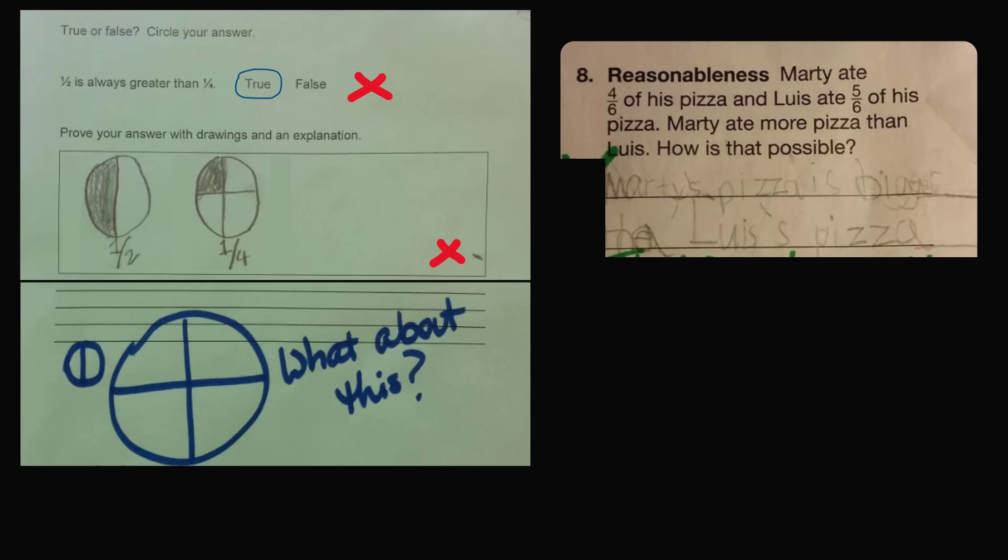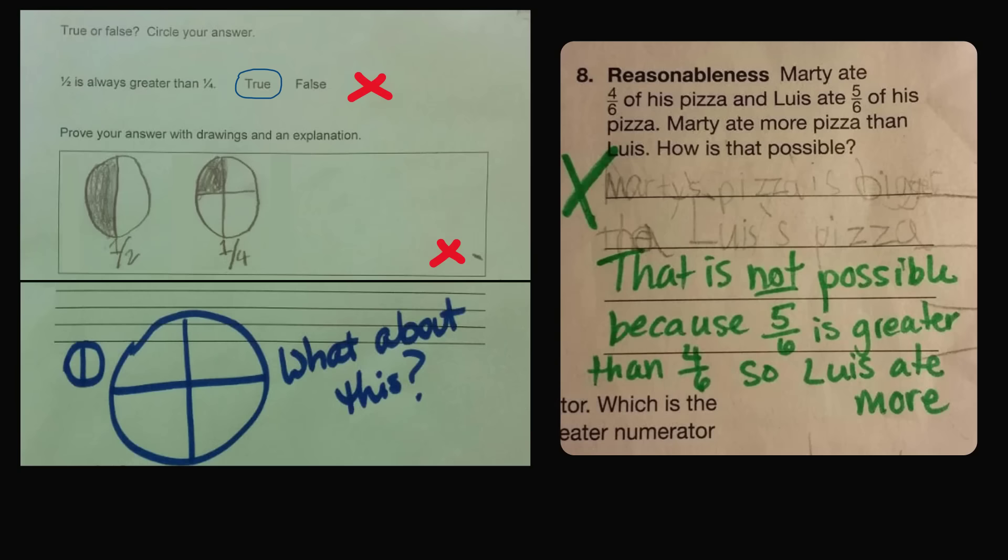In this exercise, the student wrote, Marty's pizza is bigger than Lewis's pizza, so that's how he ate more pizza, even though he ate four-sixths of his pizza and Lewis ate five-sixths of his pizza. Once again, the teacher marked this as wrong and said, that is not possible because five over six is greater than four over six, so Lewis ate more.